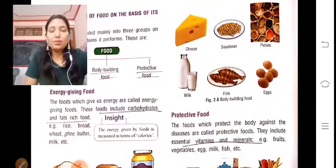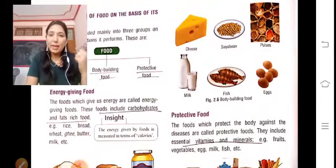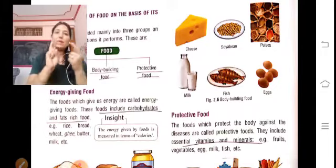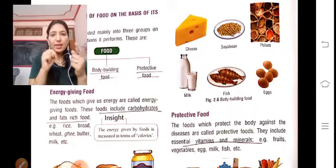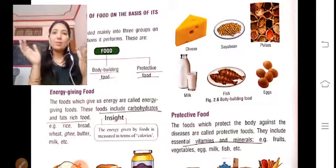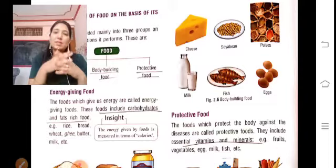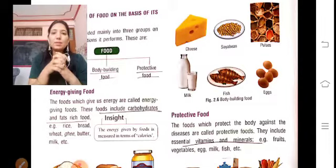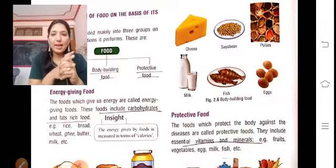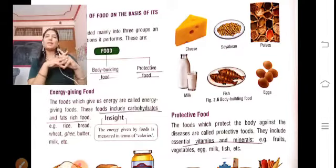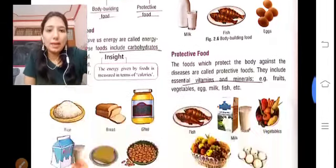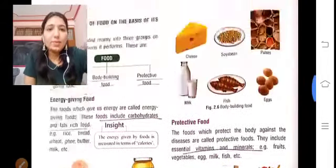Energy-giving food is divided into two components: carbohydrates and fat. Examples of energy-giving foods include rice, bread, wheat, ghee, butter, and milk. These are all energy-giving foods.